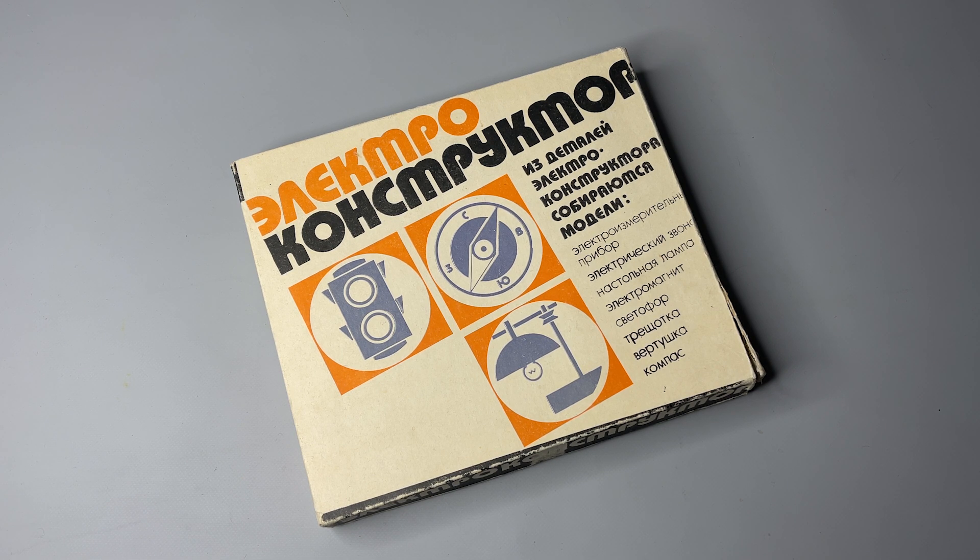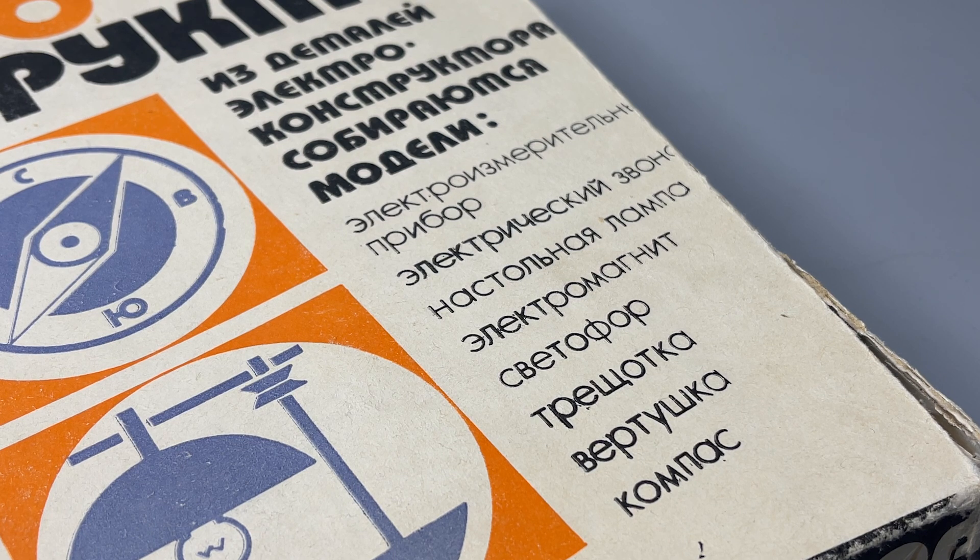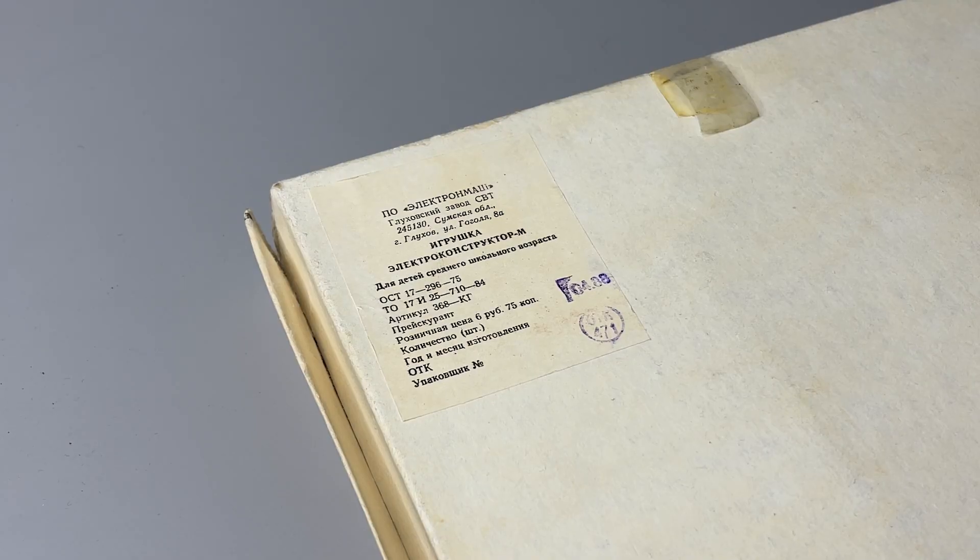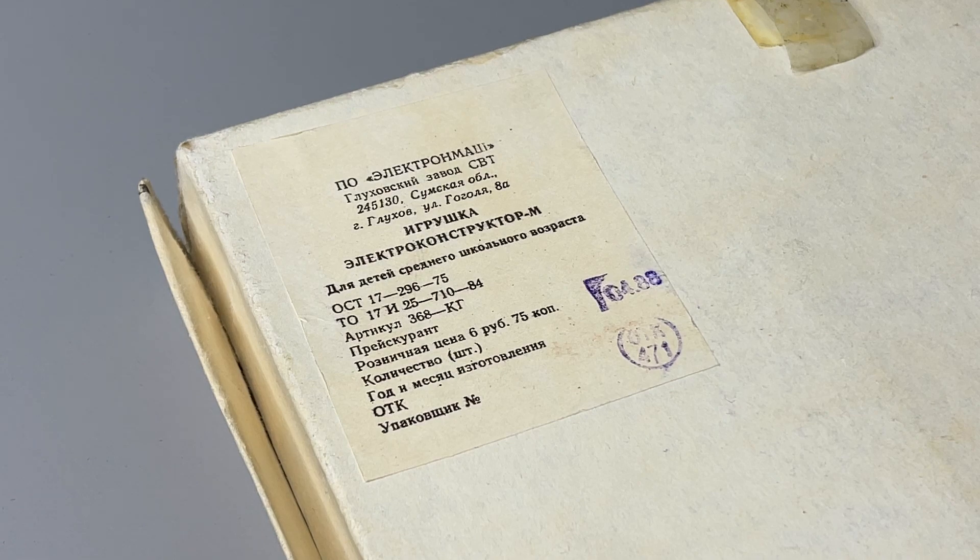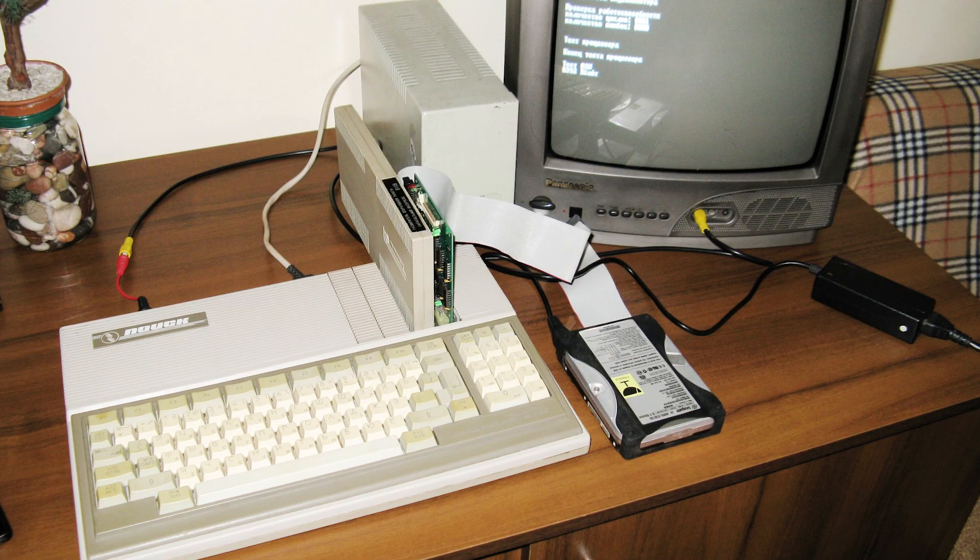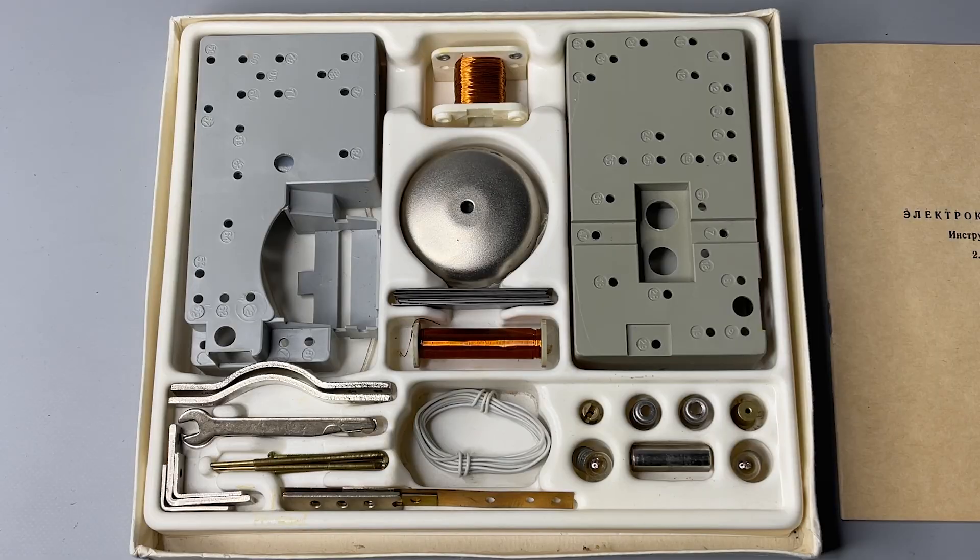So this set allows you to learn the basics of making simple electric devices and study some principles like electromagnetism. It says here on the box that you can create models of a meter, a bell, a lamp, a clicker, a traffic light, a spinner and a compass. Pretty interesting. So it was produced here in Ukraine in the town of Gluhev by one of the factories of the Electronmash Association. This association was famous for its microelectronic production and also for computer equipment such as Poisk computers that maybe some of you have. So actually it is not a wonder why they made this kind of toy. And inside we have an entire box of various wonders.